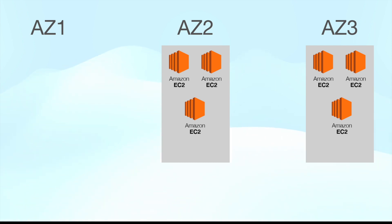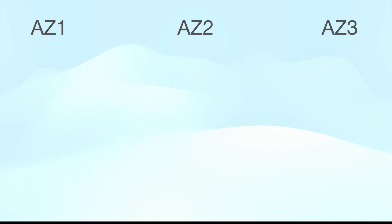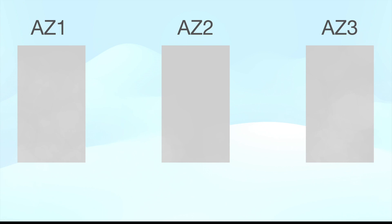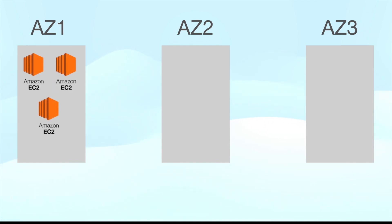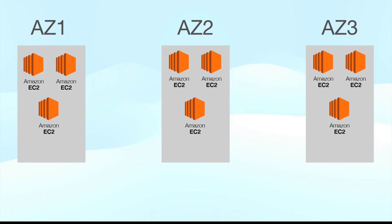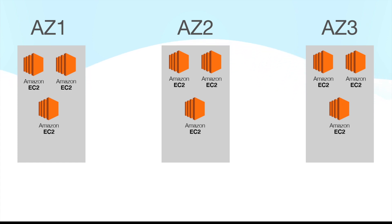If your application needs six instances at all times, there is a better solution. Again, you have three AZs — same as the initial scenario — but now instead of two EC2 instances in each AZ, you set up three instances per AZ, so in total you are setting up nine instances.